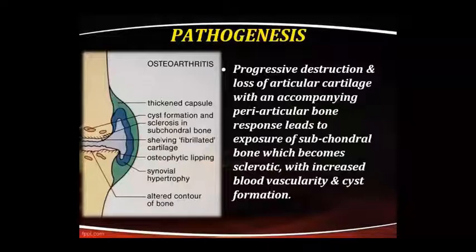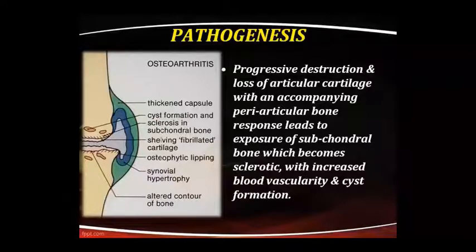Now listen to the pathogenesis of OA. Articular cartilage loss and destruction occurs, and peri-articular bone response also happens. As a result, there is subchondral bone exposure. The subchondral bone becomes sclerotic, blood vascularity increases, and cysts form. In the diagram, thick capsule, cysts, sclerosis, fibrillated cartilage, and changed cartilage are shown, along with osteophytic lipping, synovial hypertrophy, and altered contour of bone.